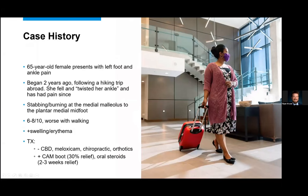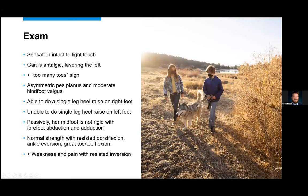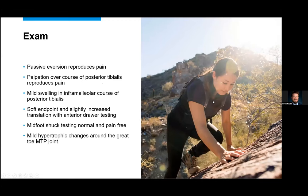This is a 65-year-old female who presents with left foot and ankle pain. It's been a couple of years in the making after an injury abroad and then some hiking. She describes stabbing and hurting in the medial ankle, 6 to 8 out of 10. She endorses some swelling, occasional redness. She's tried several different treatments, all of which have provided minimal benefit, and she presents to the clinic wondering about diagnosis and treatment plan. On examination, she has normal sensation, too many toes sign, slightly antalgic gait, asymmetric pes planus, and some hindfoot valgus. She's unable to do a single leg heel raise on that foot, but she can on the other side. She has normal strength with the exception of resisted inversion, which also gives her some pain. She has tenderness over the course of the posterior tibialis tendon and mild asymmetric swelling in the intramalleolar region.